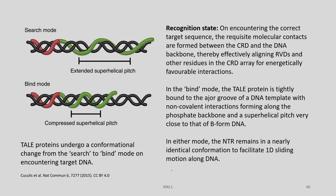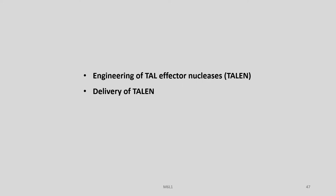In either mode the N-terminal region remains in a nearly identical conformation to facilitate sliding motion along the DNA. The TAL proteins undergo a conformational change from the search to bind mode on encountering the target DNA. This is how the TALs finally find their complementary DNA sequence and bind to it in very tight bonding.